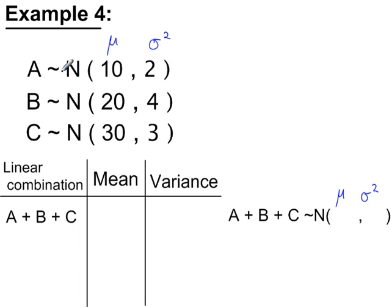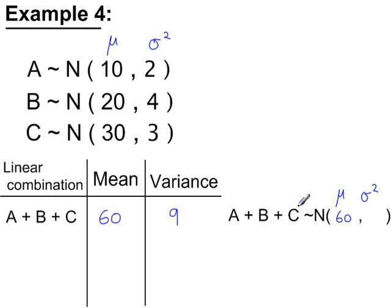Example 4: this time we have three independent normal variables. The normal variable a plus b plus c will have a mean of the mean of a plus the mean of b plus the mean of c, giving 60. Each one has a variance, and we add the variances together, giving a variance of 9. So a plus b plus c is normally distributed with a mean of 60 and a variance of 9, and its standard deviation is the square root of 9, which is 3.